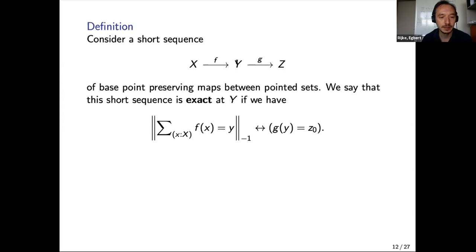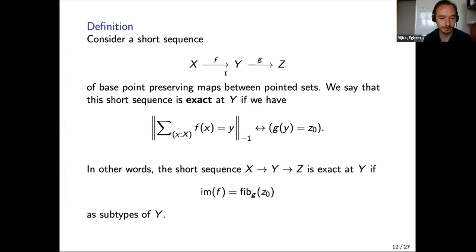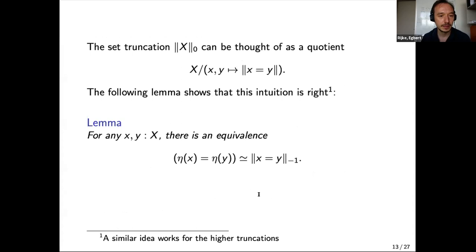Concretely: I look at the base point of Z and take the fiber of g, which is like the kernel of g and is a subtype of Y. Exactness holds precisely when the image of f equals the kernel of g. Here they are just maps, but if they were group maps that would be exactly the kernel.